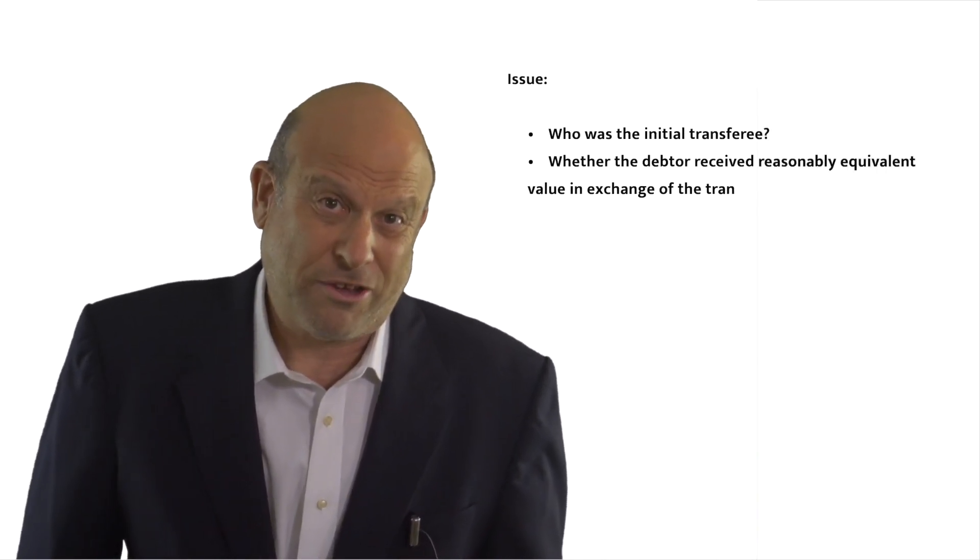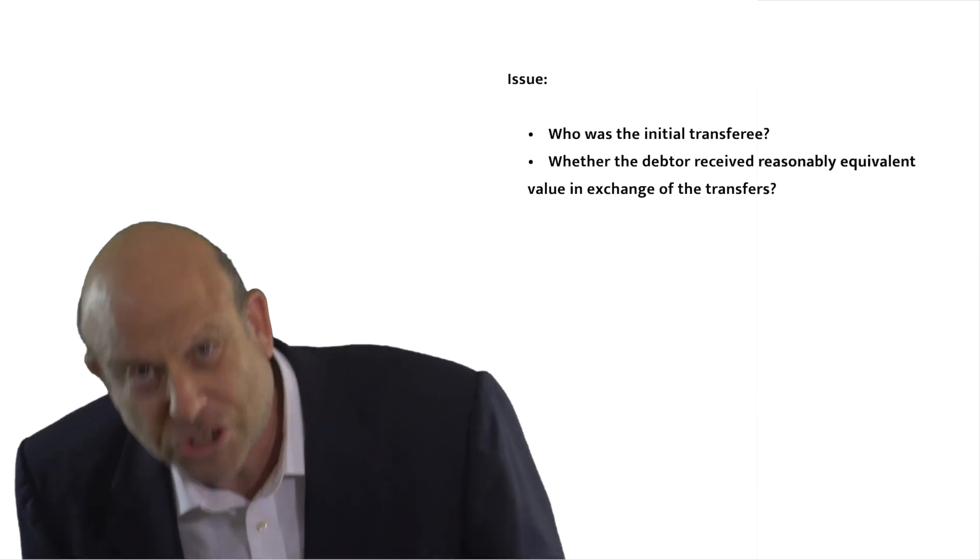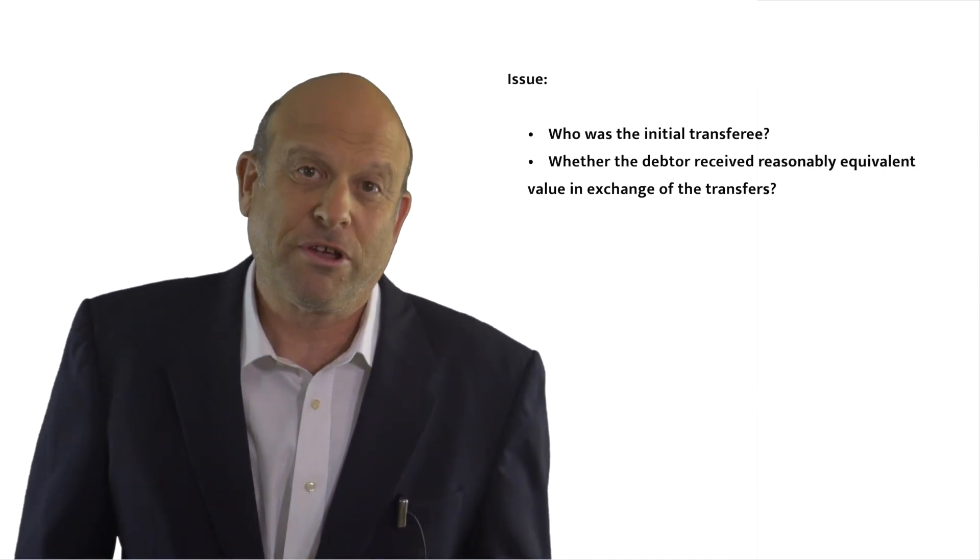The casino wanted to be a subsequent transferee, not an initial transferee, for a very good reason. A subsequent transferee who receives the money from the initial transferee can defend against a fraudulent conveyance case by arguing that it gave value and acted in good faith and without knowledge of the avoidability of the transfer. The absolutely critical difference between 550B1, which protects subsequent transferees, and 548C, which protects initial transferees, is this.